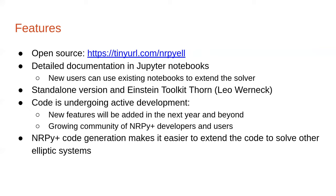It has a standalone version and also a nice 2Q thorn that Leo worked very hard on — it's also open source in the same GitHub repository. The code is undergoing active development, so new features will be added in the next year and beyond. We're going to be extending the mathematical formulations and coding up different types of initial data. There's also a growing community of NERPPLUS developers and users where you can get help and collaborate. The NERPPLUS code generation makes it easier to extend the code and solve other elliptic systems.